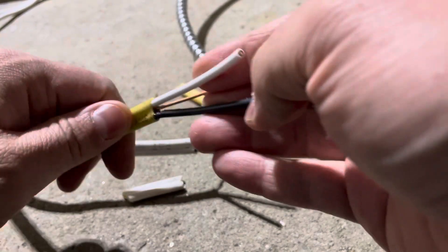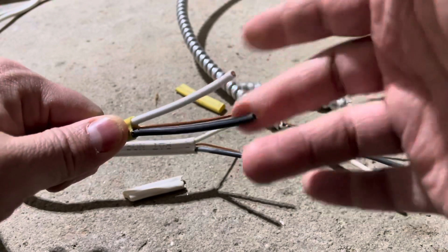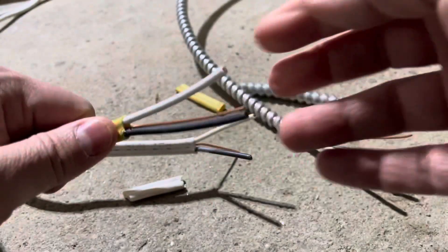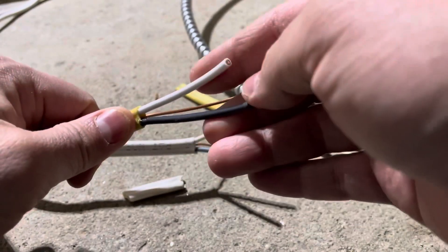This I believe is 12-2, which means these two insulated wires, which is the 2 in that 12-2, are 12 gauge each. So two insulated wires at 12 gauge each is 12-2 wiring.